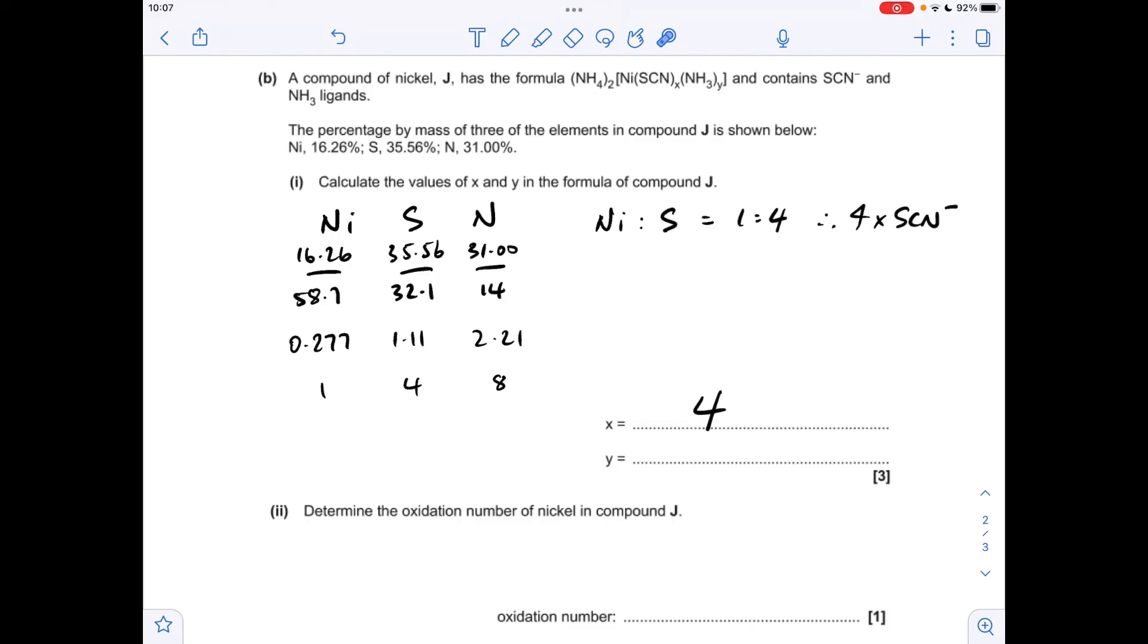Moving on to the value for Y, we need to use the nickel to nitrogen ratio, so we know that's 1 to 8. We've just established that X is 4, so 4 of the 8 nitrogens are coming from these SCN⁻ ions. We were given this 2 here, so we know there's another 2 coming from these 2 ammonium ions, so there are 2 left. Y must be 2.